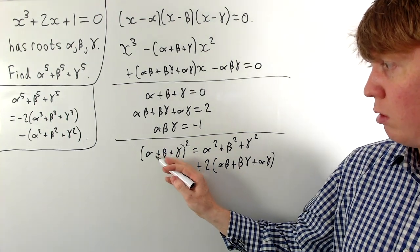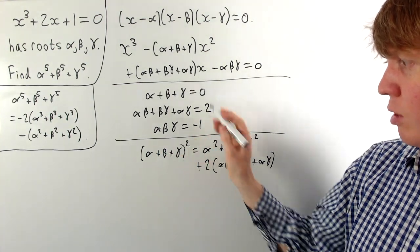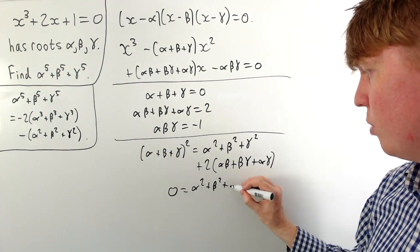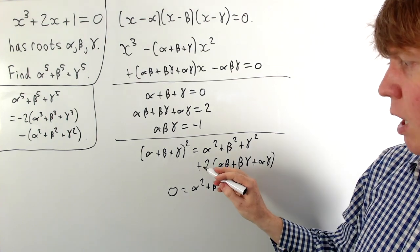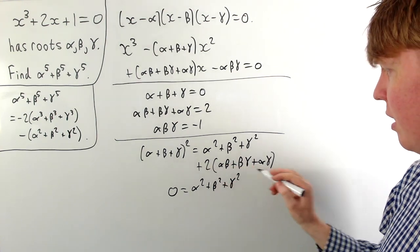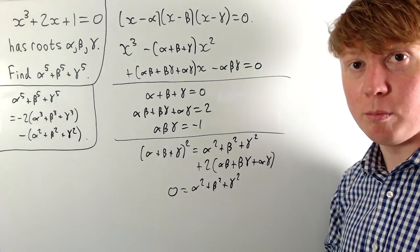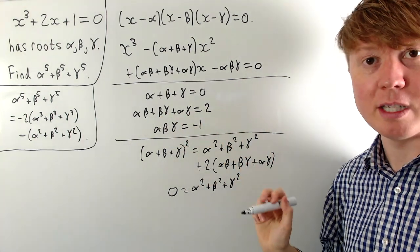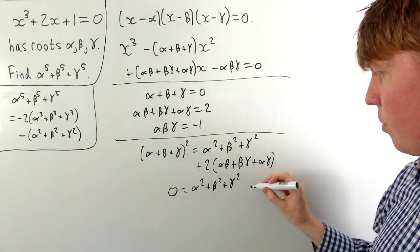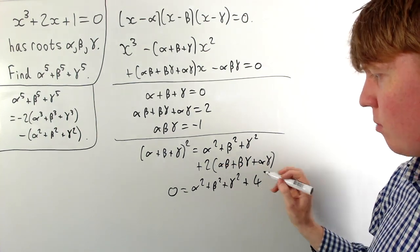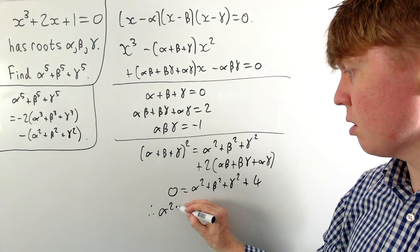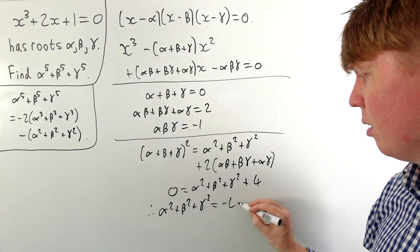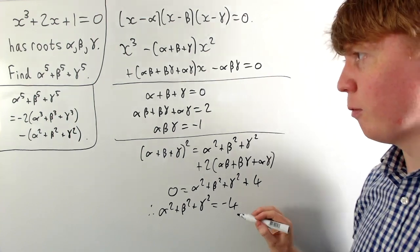Substituting in our known values: the sum of roots is zero, so zero equals the sum of squares plus two times two, which is plus four. Therefore alpha squared plus beta squared plus gamma squared equals negative four.